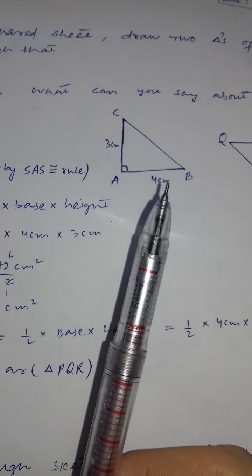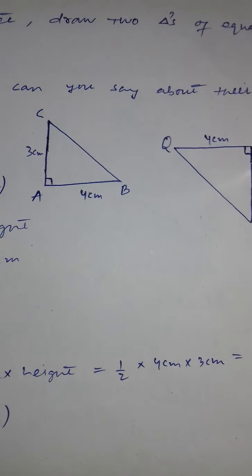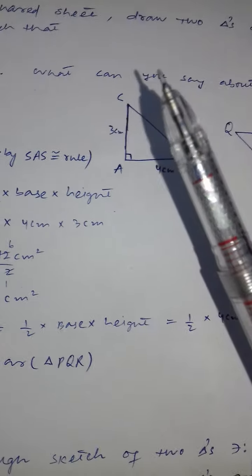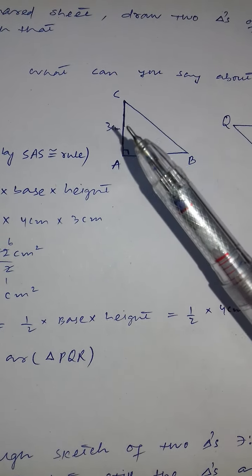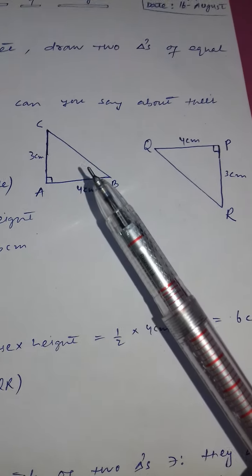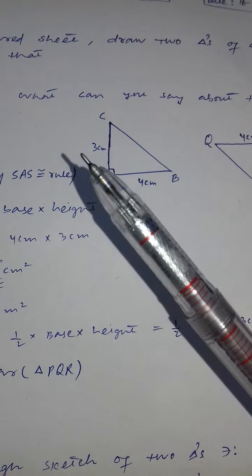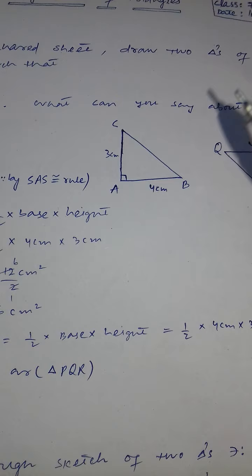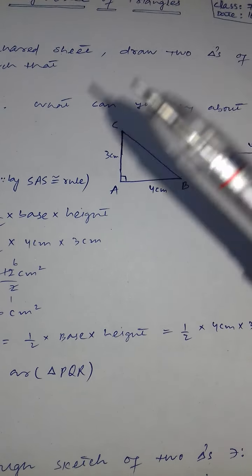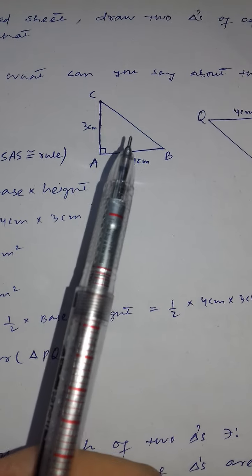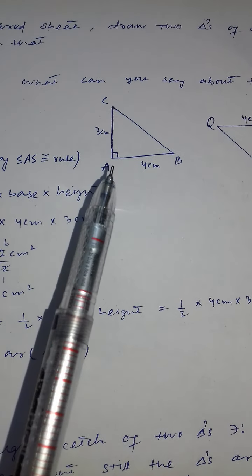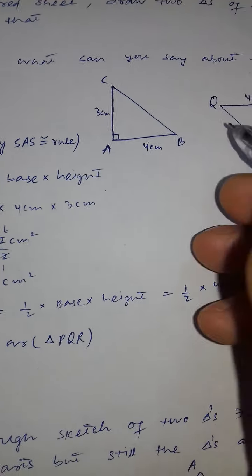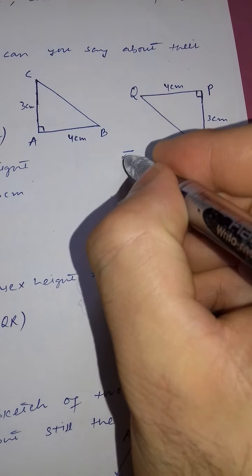We apply the SAS congruence rule. You might think to apply RHS since there's a 90° angle, but we don't have direct information about the hypotenuse. You could use Pythagoras' theorem to find it, but it's better and faster to simply apply SAS. Using the SAS rule, both triangles are congruent.